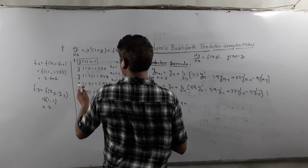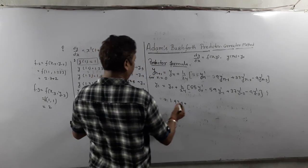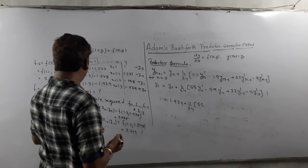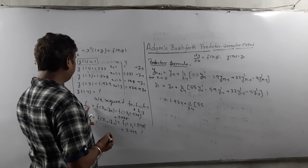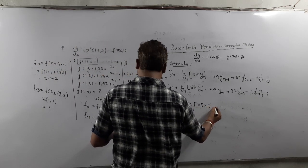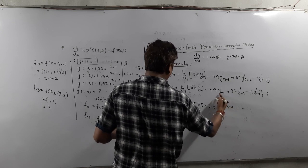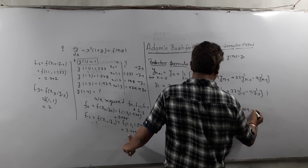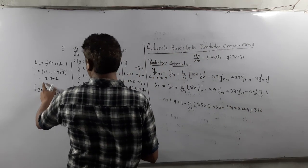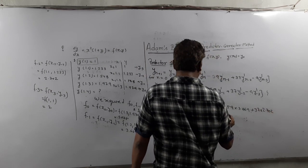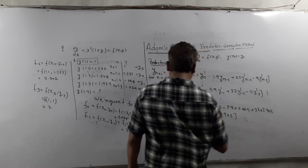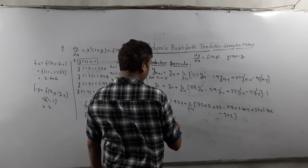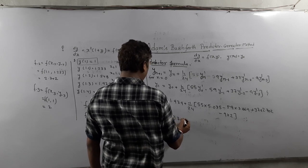Applying the predictor formula with n = 0: y1 = y0 + (0.1/24) × [55·f0 − 59·f(−1) + 37·f(−2) − 9·f(−3)], which is 1.979 + (0.1/24) × [55×5.035 − 59×3.669 + 37×2.704 − 9×f(−3)]. Simplify this to get approximately y1 = 2.572.